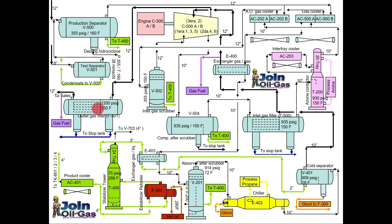Now let's look at the condensate flow. Condensate separated from various vessels — the production separator, inlet gas scrubber, compressor after-scrubber, absorber after-scrubber, and cold separator — all moves to the condensate stabilization unit. Here we will maintain the TVP (true vapor pressure) and RVP (Reid vapor pressure) of the condensate for storage purposes.